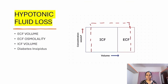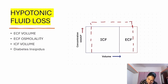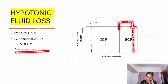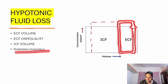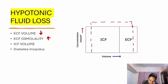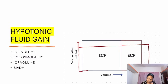In hypotonic fluid loss — such as in diabetes insipidus — a large amount of free water is lost, so tonicity increases, causing hypernatremia. ECF volume shrinks and ECF osmolality increases. ICF must also increase its tone to match, so it loses fluid to ECF. Therefore: ECF volume reduces, ECF osmolality increases, and ICF volume also reduces.